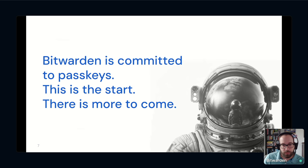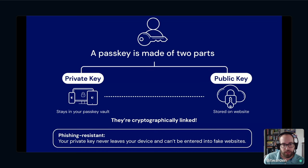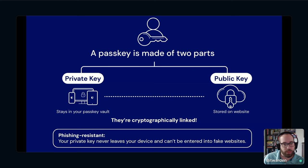A Passkey is made up of two parts — two different keys. Keys are very long, random strings of characters. For a Passkey, there is a private key and a public key. The private key gets kept in your Passkey vault, and the public key gets kept on the website you're trying to log into. Importantly, these two keys are cryptographically linked, so messages encrypted by one key can be decrypted by the other, which enables clever things for authentication.